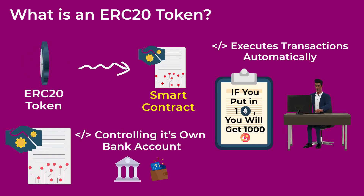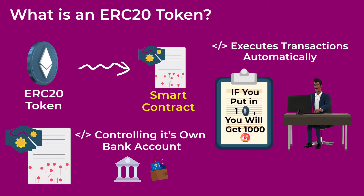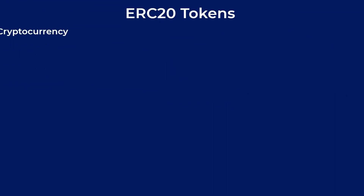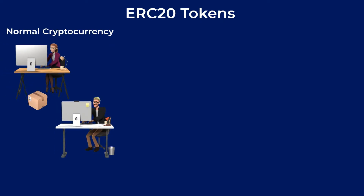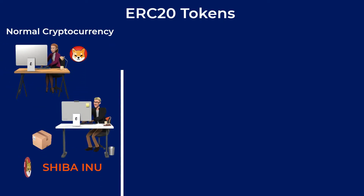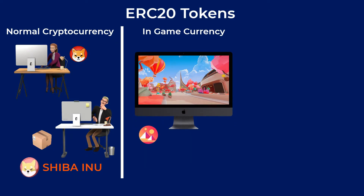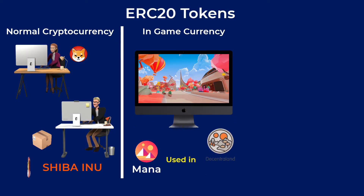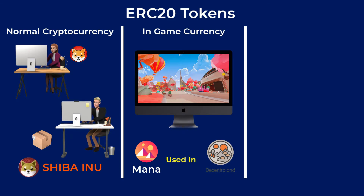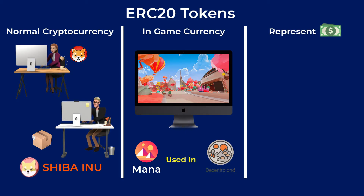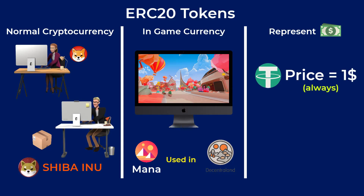Because smart contracts can perform a lot of functions, ERC-20 tokens are usable in many ways. They can be used as a normal cryptocurrency to make purchases, like the Shiba Inu token, or as an in-game currency like the Mana token in Decentraland. An ERC-20 token can also be used to represent the price of the US dollar — for example, Tether is an ERC-20 token with a constant price of $1.